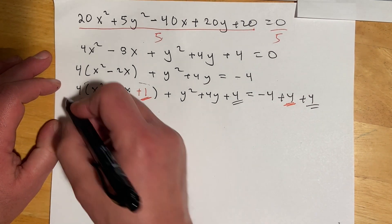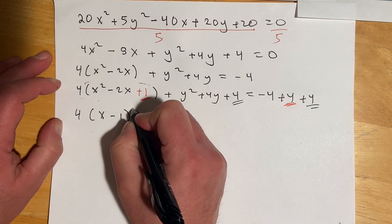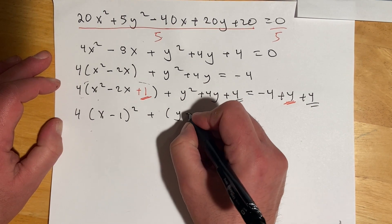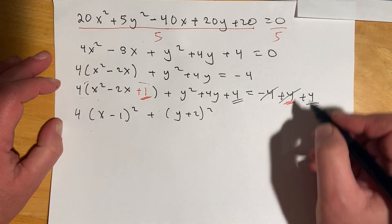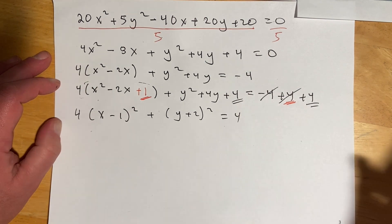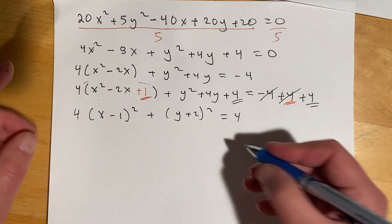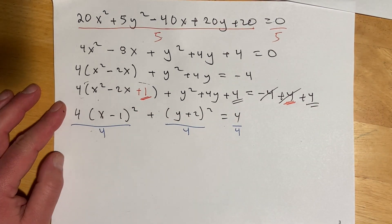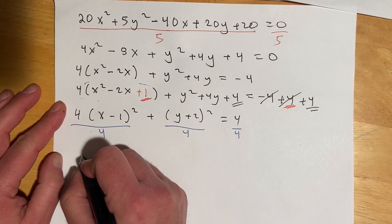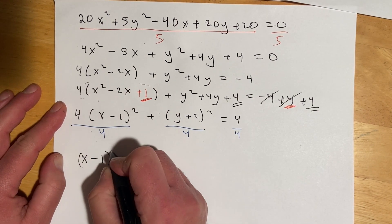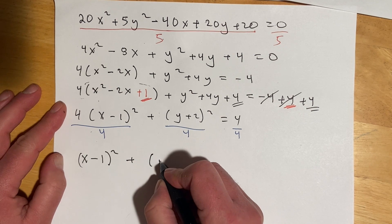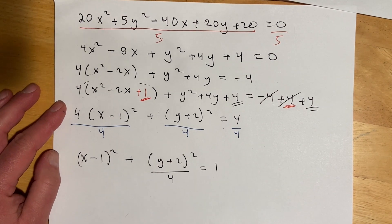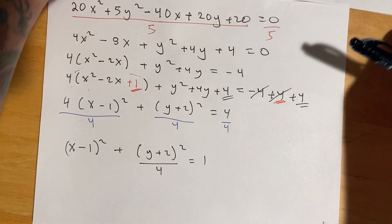And then, let's factor. So, we've got 4 times x minus 1 quantity squared, plus y plus 2 quantity squared, minus 4, plus 4 cancels, equals 4. And then, I need this to equal 1, so that tells me I need to divide everything by 4. And then, once I do that, we've got x minus 1 squared, plus y plus 2 over 4, equals 1. And so, now, let me come back here to the one with the graph.